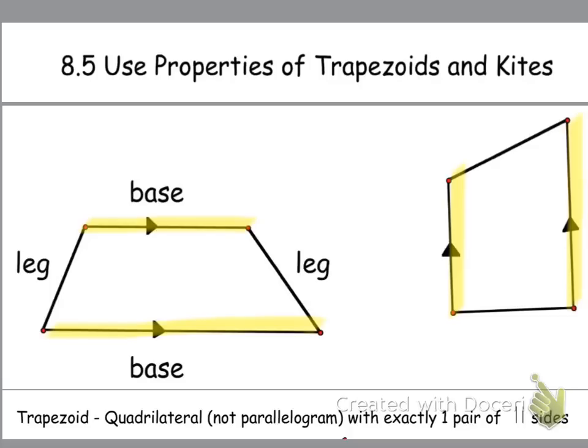The other sides, the non-parallel sides, are called the legs. So here's a leg and here's a leg. And those, like I said earlier, will intersect if they are continued out. And so here's another one and here's the other legs over here. And they don't always have to be congruent, as you can tell in these pictures here, they're not necessarily the same.